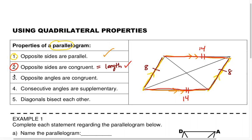By opposite angles, they mean the following: if we focus on this angle here and say that it is 70 degrees, the opposite angle over in this corner has to have the same measure — 70 degrees, they have to be the same. The other pair is a different sized angle, but this angle will be the same measure as its opposite. So if this is 110 degrees, this opposite angle will also be 110 degrees.